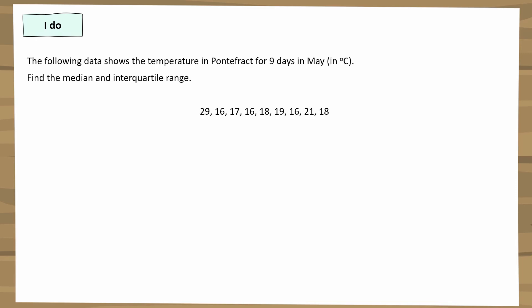Here's an example of how to find the median and interquartile range from a list of data. This shows the temperature in Pontefract for nine days in May in degrees Celsius. To find the median, first put the data values in order — scan for the smallest value, write it down, cross it off, and check you have all nine values. With nine values, the fifth value is the median, which is 18.